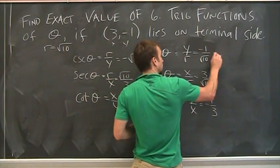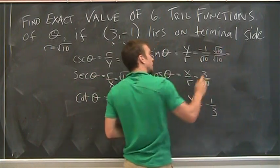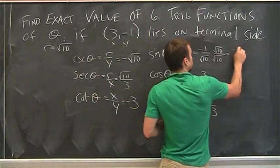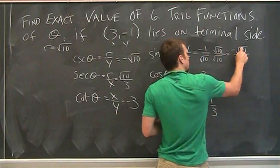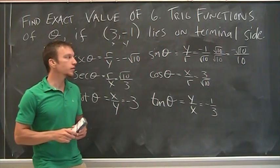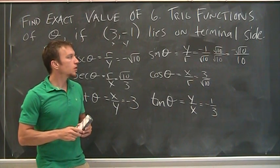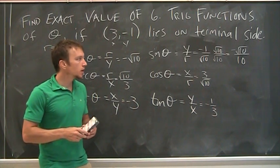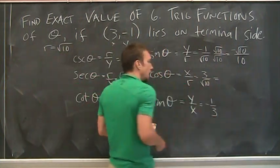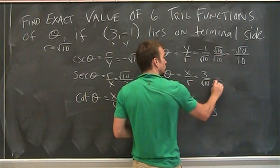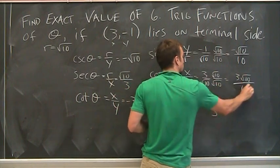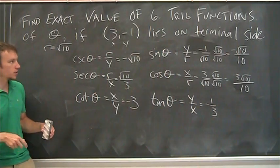which means I got to multiply by 1. So I multiply by a form of 1 by choosing root 10 over root 10. And that gives me the answer for sine as negative root 10 over 10, right? Negative root 10 over 10, with no radical in the denominator, or irrational number in the denominator. And same thing here, 3 root 10 by root 10 over root 10 gives me 3 root 10 over 10, okay? And those are your six trig functions.